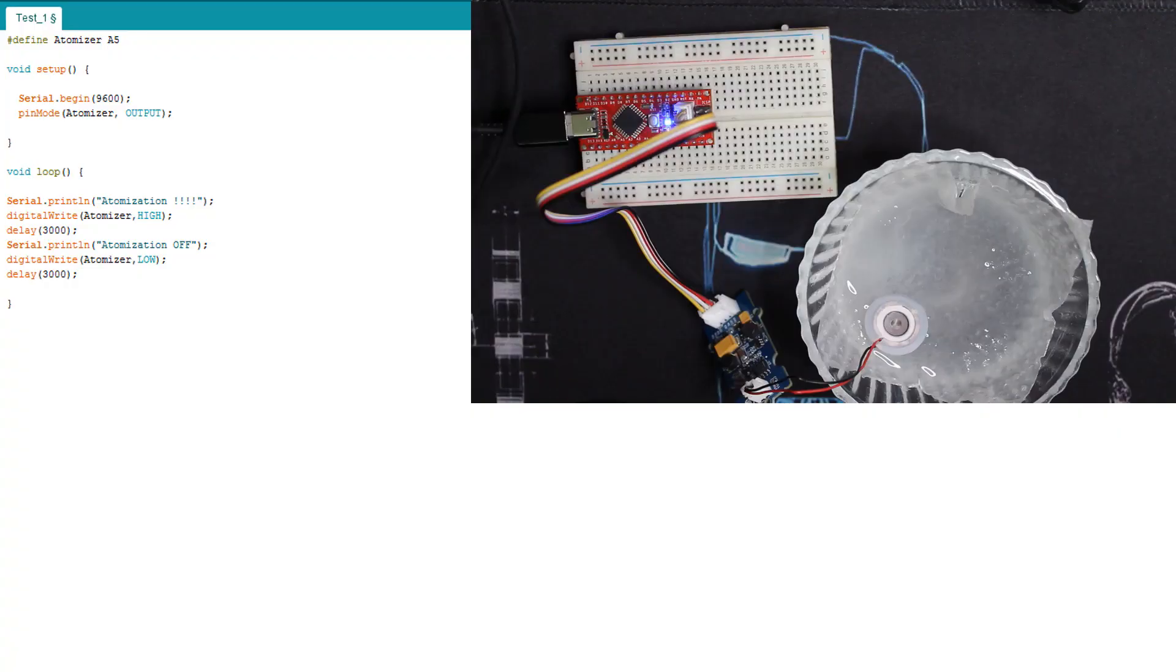This is the first code I'll be using. It's very simple. I identified the A5 as the atomizer—it enables it or disables it. It works for three seconds and then goes off for another three seconds. Upload the code.